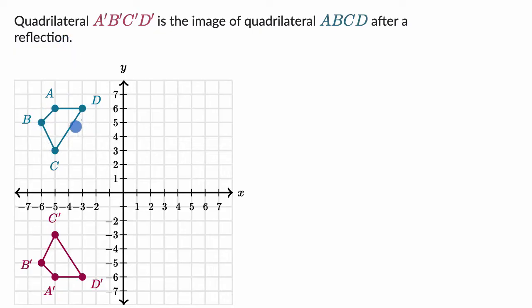So we can see ABCD here and A prime, B prime, C prime, D prime right over here. And what we want to do is figure out a rule for this transformation. So pause this video and have a go at that by yourself before we do this together.